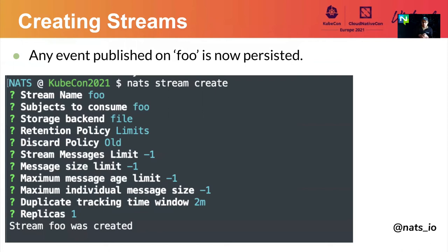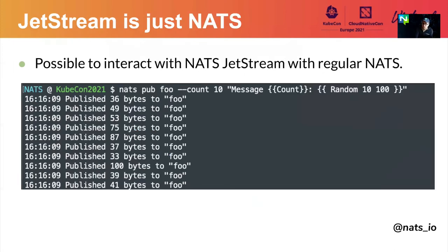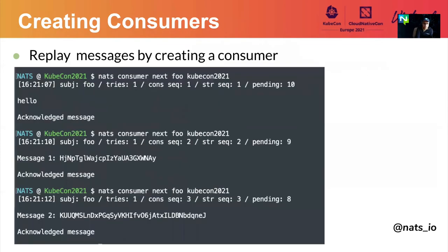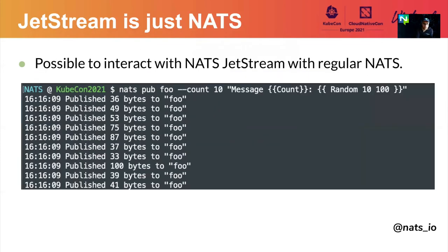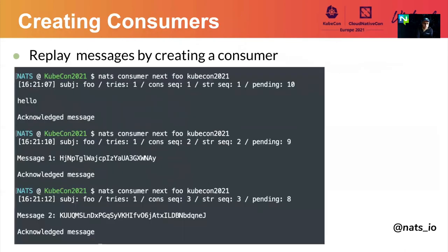Through the NATS CLI you can also create streams. In this case, we're making a stream named Foo with a lot of the defaults. This means any event published into the Foo subject will also be persisted. Jetstream is just regular NATS — the regular NATS protocol is all it takes to persist those messages. So we send 10 messages into Foo and then create a pull-based consumer that will be fetching each one of those messages.